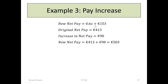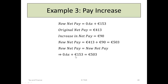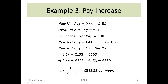So 0.6X plus 153 must equal €503, since we calculated the new net pay in two ways. Therefore 0.6X equals €503 minus €153, or €350. And X equals €350 divided by 0.6, which is €583 per week. That is his new gross pay to be €90 better off.